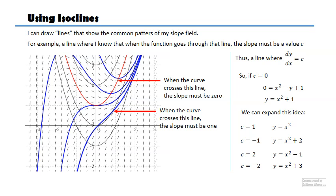Where the function crosses the slope-one isocline the slope must be one, and where it crosses the slope minus-one isocline the slope must be minus one. All of the solution lines respect that — you can see individual lines where the slope is zero, then one, then two, confirming what the isoclines predict. These are isoclines.